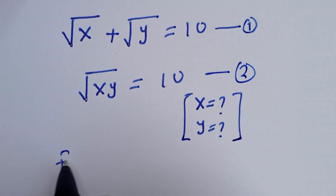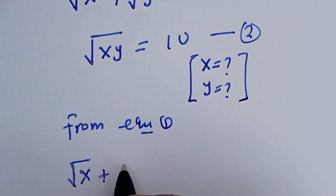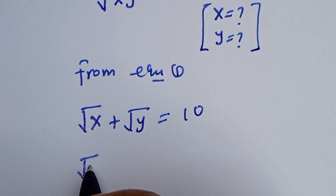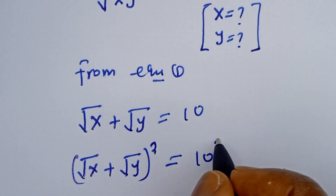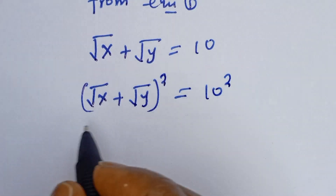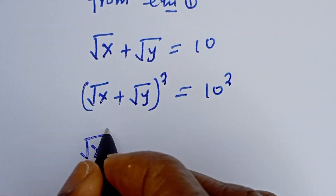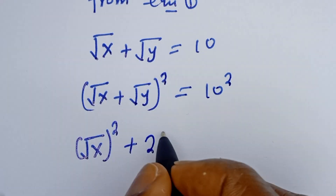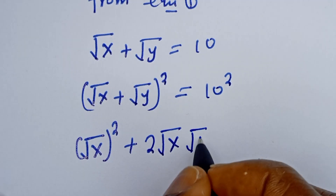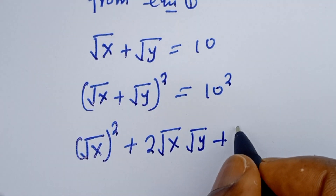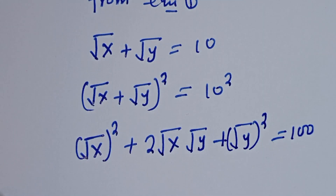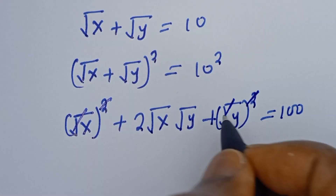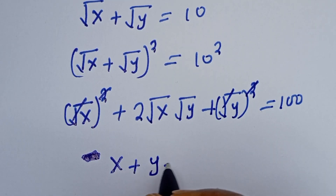From equation 1 we have square root of x plus square root of y is equal to 10. Let's square both sides: square root of x plus square root of y, all squared, is equal to 10 squared. This expands as square root of x all squared, plus 2 times square root of x times square root of y, plus square root of y all squared, is equal to 100. This simplifies to x plus y plus 2 square root of xy.